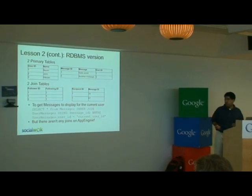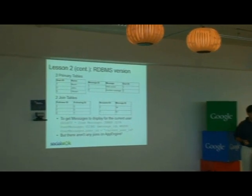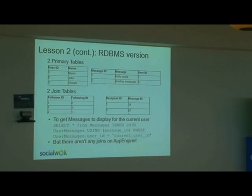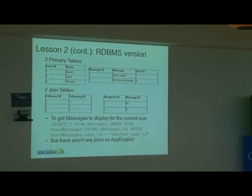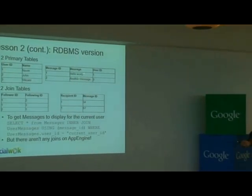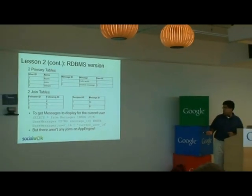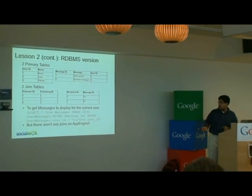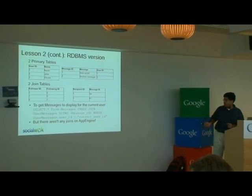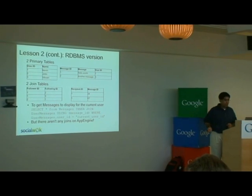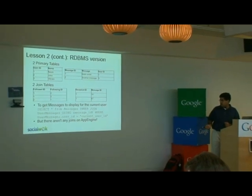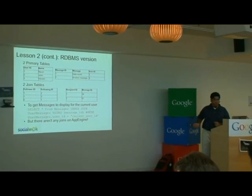Before I talk about the Google App Engine solution, I want to go briefly back and talk about relational databases. For relational databases, there are two common tables: a user table and a messages table. User ID 1 posted 'hello world', User ID 3 posted another message. Then I have two join tables — a following table giving me a list of recipients, and a messaging table giving me recipients by message. When I need to fetch all these messages, I do this complicated SQL query, and the big problem is the join.